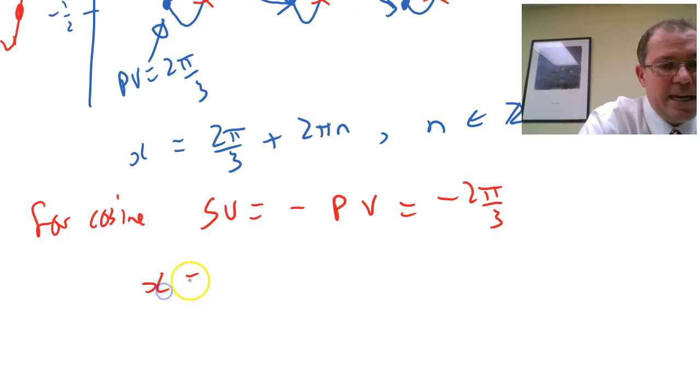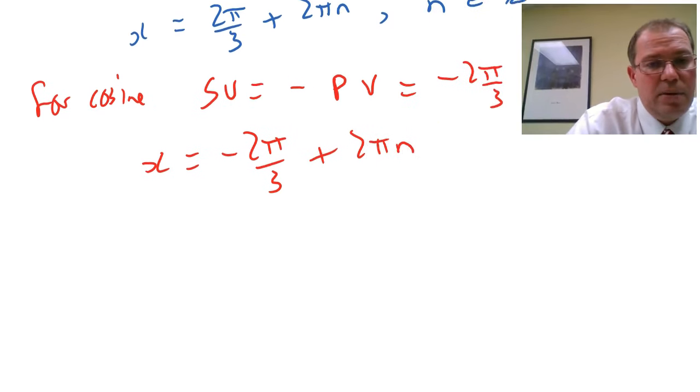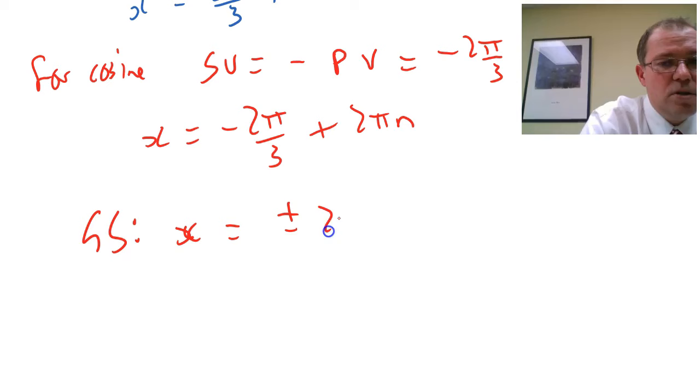So we can generate our second answer, which is minus two pi over three plus two pi n. And an easier way to write that is actually combine the two together. So my full general solution is x equals plus or minus two pi over three plus two pi n.